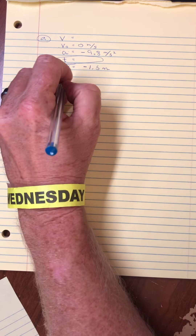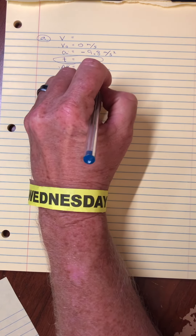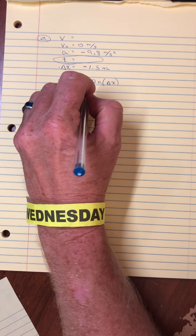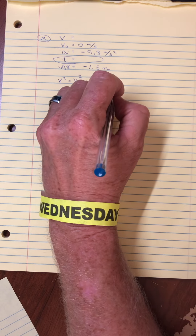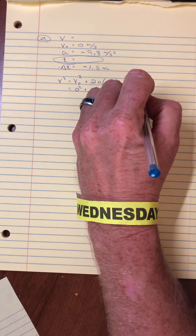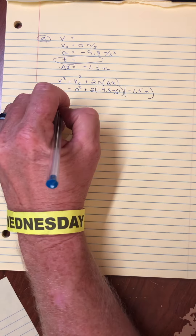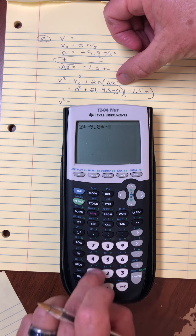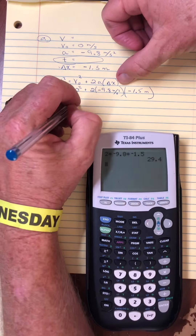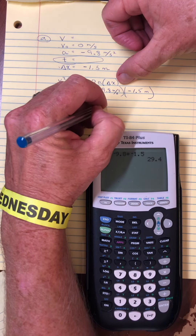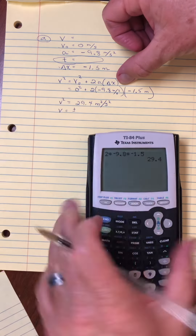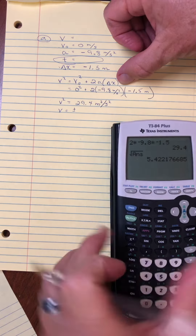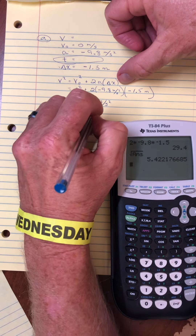That's why I would choose kinematics equation number three, which lacks time: V² = V₀² + 2a·ΔX. So: final speed squared equals initial speed squared — which is zero — plus 2 times negative 9.8 times negative 1.5. Grabbing a calculator: 2 × (−9.8) × (−1.5) = 29.4. The units are meters squared per seconds squared. Taking the square root gives 5.42 meters per second.